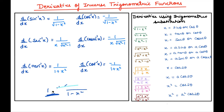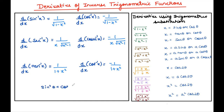If you cannot differentiate a function directly because it is an inverse trigonometric expression, simplify it first, then differentiate. If you see √(1−x²) inside, substitute x = sin θ or x = cos θ, because the identity sin²θ + cos²θ = 1 reduces it: under root of 1−sin²θ becomes cos θ.